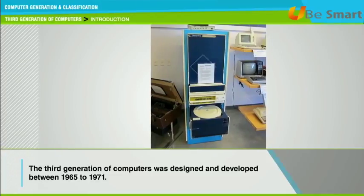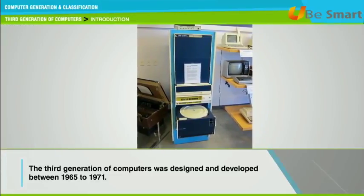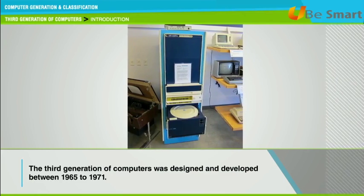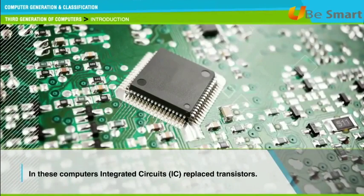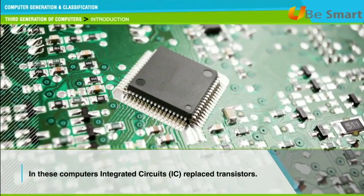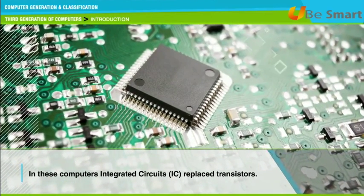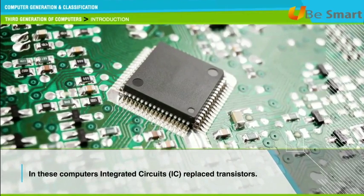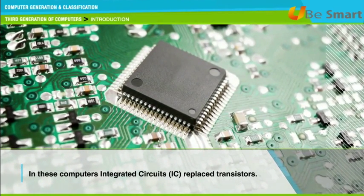The third generation of computers was designed and developed between 1965 and 1971. In these computers, transistors were made miniature and placed on silicon chips called semiconductors. This drastically increased the speed and efficiency of computers.